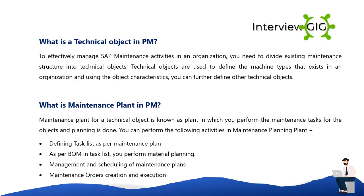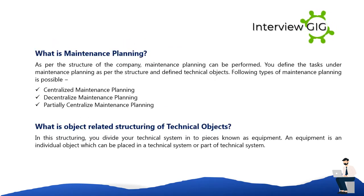A maintenance plant for a technical object is the plant in which you perform maintenance tasks for the objects and where planning is done. Activities in the maintenance planning plant include defining task lists as per the maintenance plan. Maintenance planning can be performed as per the structure of the company, and you define tasks under maintenance planning based on the defined technical objects.